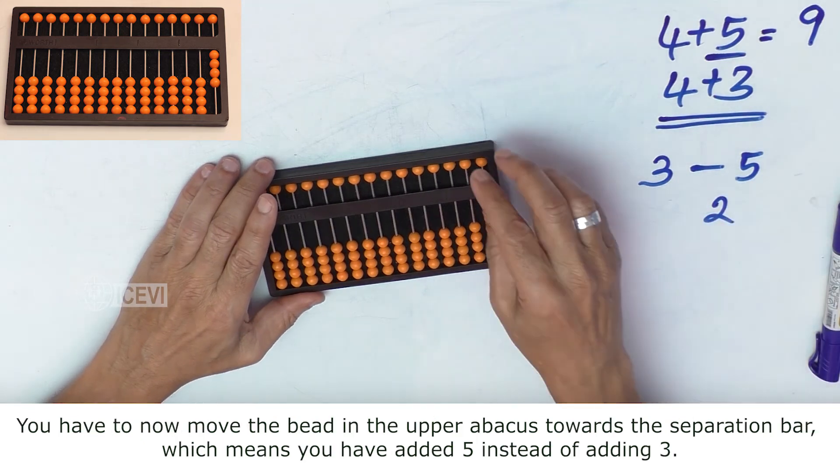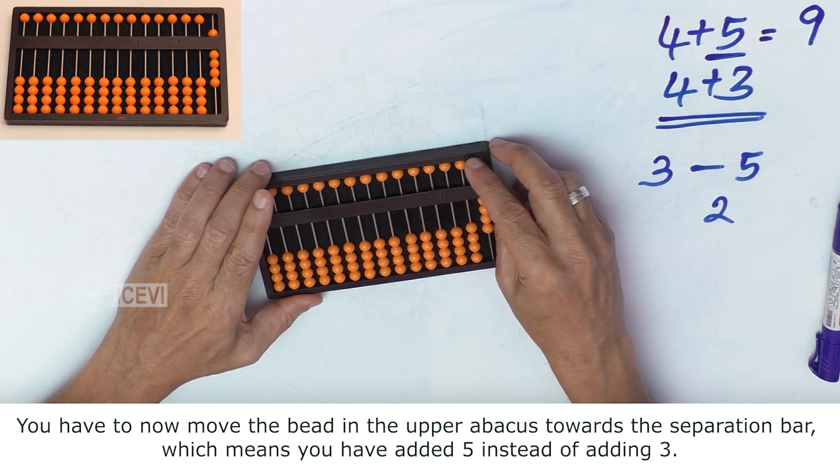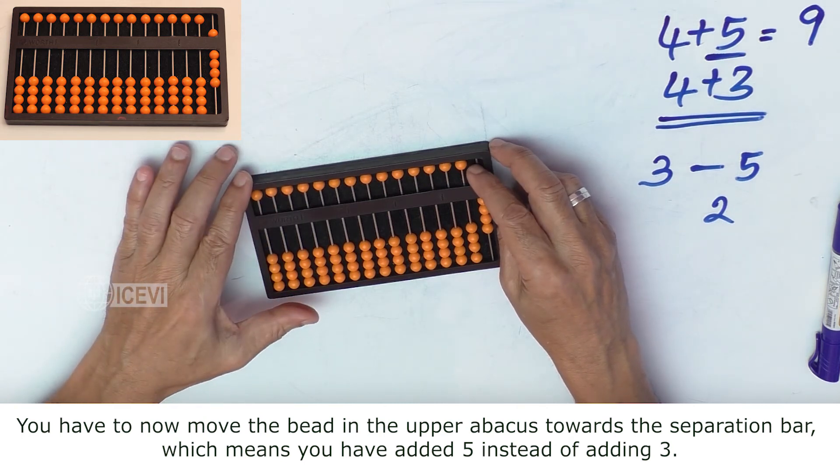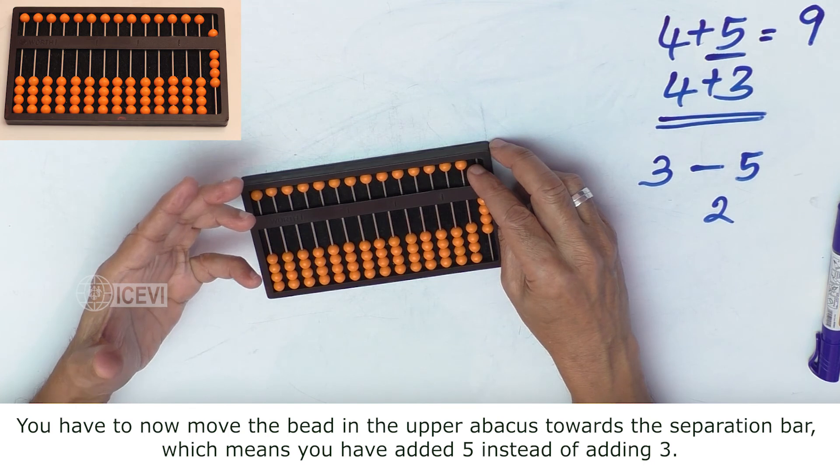You have to now move the bead in the upper abacus towards the separation bar, which means you have added 5 instead of adding 3.